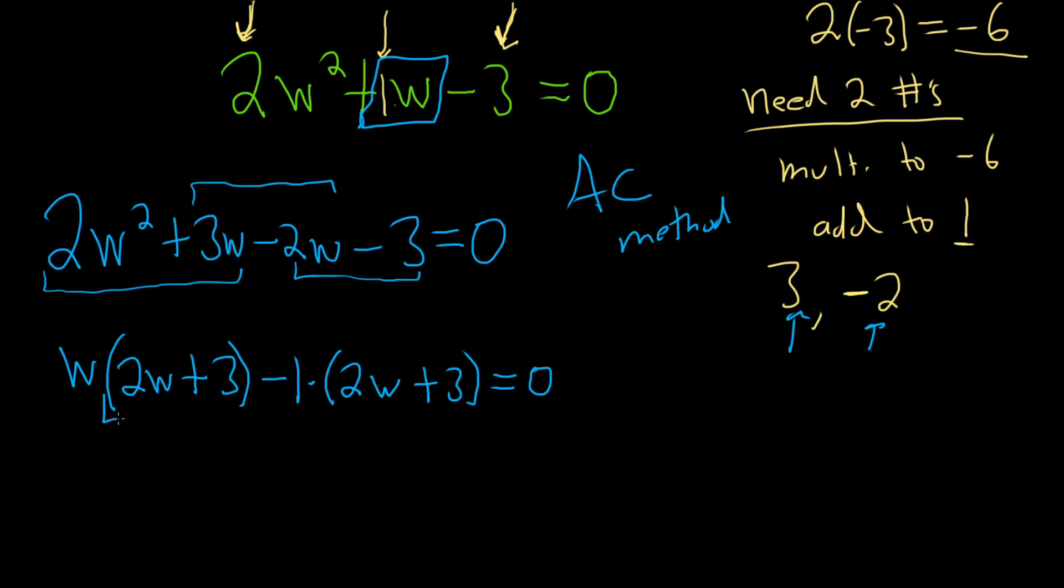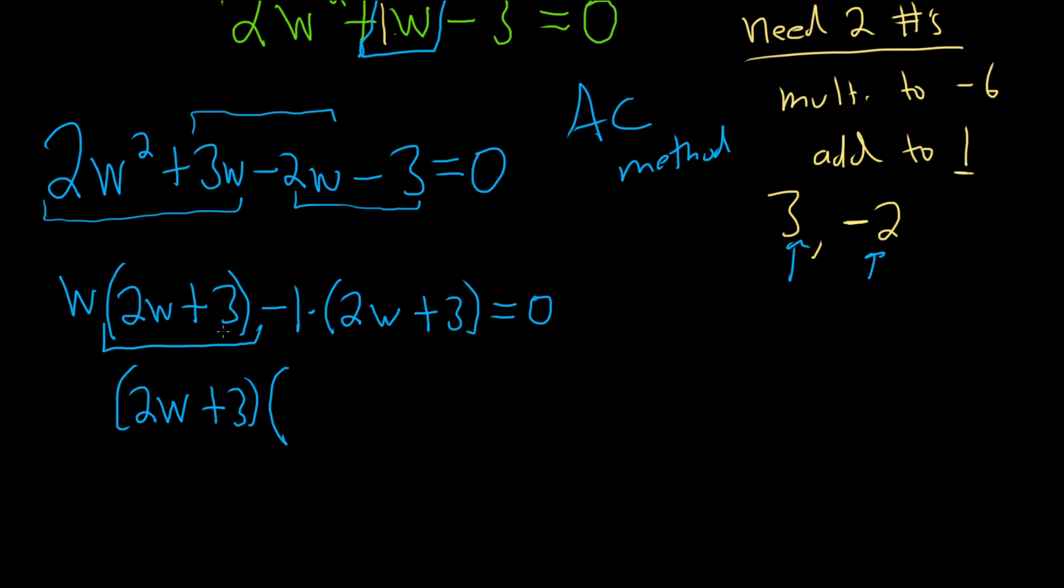And now we can factor out the 2W plus 3. So 2W plus 3, so you write it down, and then you write the parentheses. And then you ask, okay, what goes here? So what do you have to multiply by 2W plus 3 in order to get W times 2W plus 3? Well, W, that's what's missing. And then over here, it's a little bit easier to see. You're just missing a minus 1. And that's equal to 0.